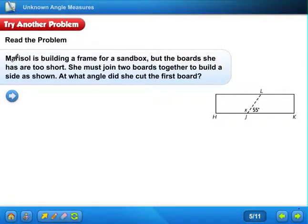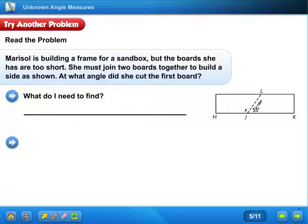Next one. Marcel is building a frame for a sandbox, but the boards she has are too short. She must join two boards together to build a side as shown. At what angle did she cut the first board? Here's the board right here. What do I need to find out? I need to find out what this angle is right here. HJL. I need to find out the measure of angle HJL.